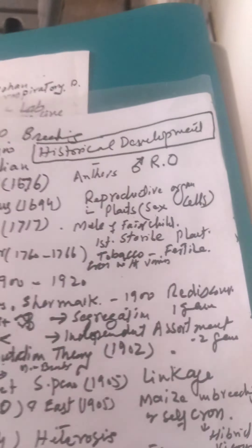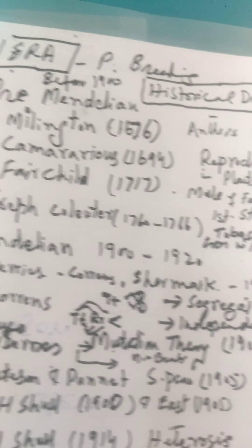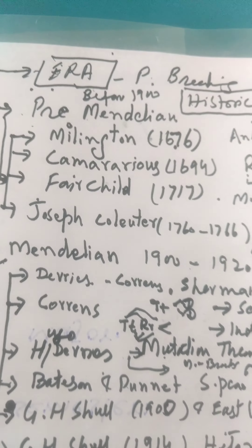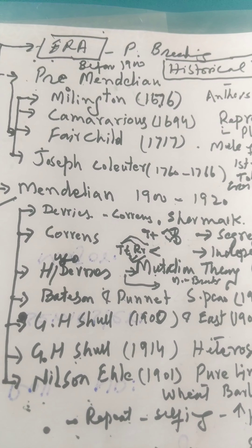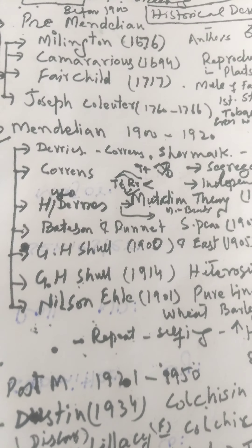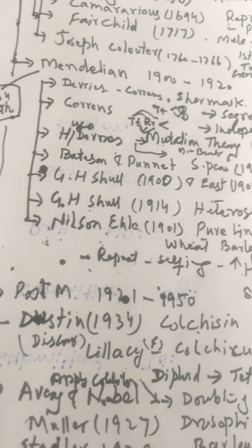Welcome to Revenue with Bird Inquiry. I am Ahaz. Today's topic is the historical developments of plant breeding. We divide it into four eras: the Pre-Mendelian Era, the Mendelian Era, the Post-Mendelian Era, and the Modern Era.